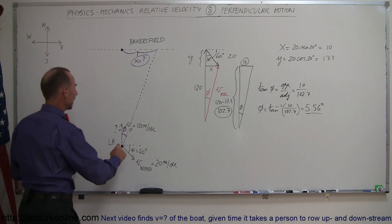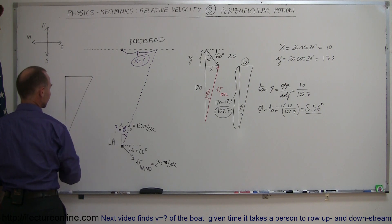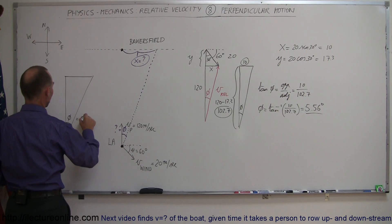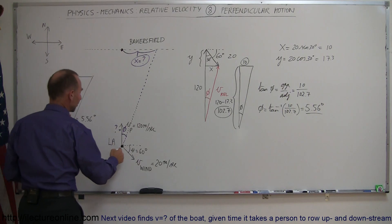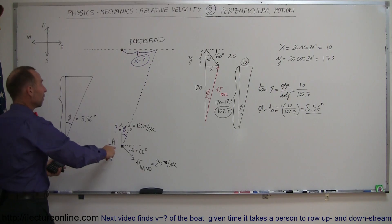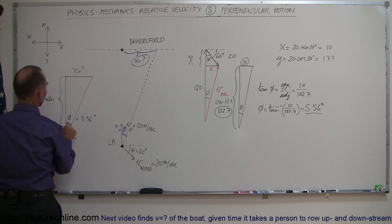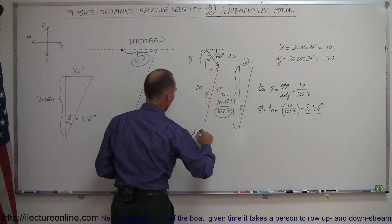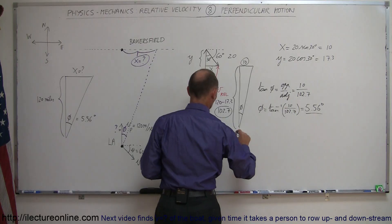Now we can figure out where the pilot ends up. We draw a new triangle using this angle phi of 5.56 degrees. In this triangle, the vector now represents distance rather than velocity. The side from LA to Bakersfield — the adjacent side — is 120 miles, and we want to find x, the distance the pilot misses Bakersfield by. We don't know the opposite side, so we use the tangent function: tangent of phi equals x over 120 miles.